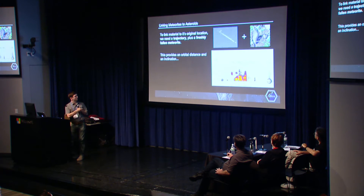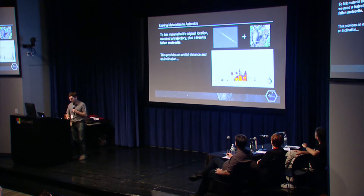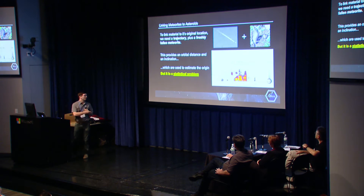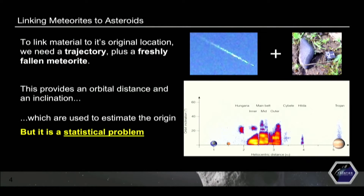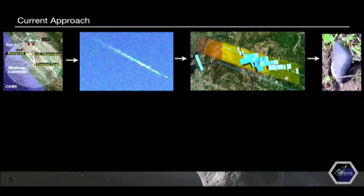From this trajectory you'll also be able to get an inclination. Based on that, you might be able to point to some group that would have eventually fed it into a certain Kirkwood gap, which would then give it the resonance to eventually expand its orbit so that it would be Earth-crossing. But this is a statistical problem — you can't just have one sample and one trajectory. Hundreds of samples and trajectories are needed to statistically say what type of objects come from which asteroid family.